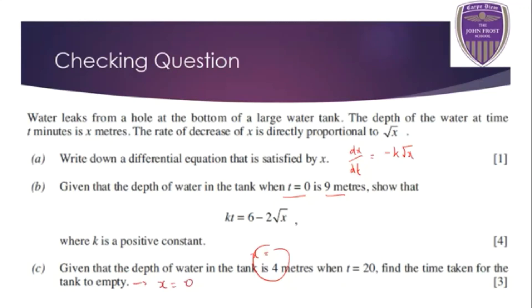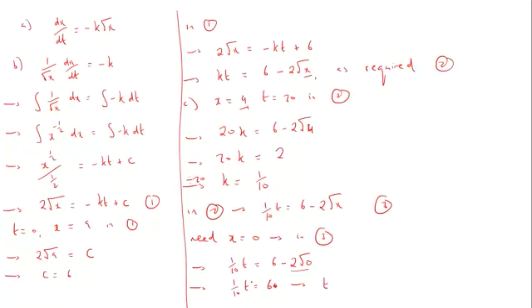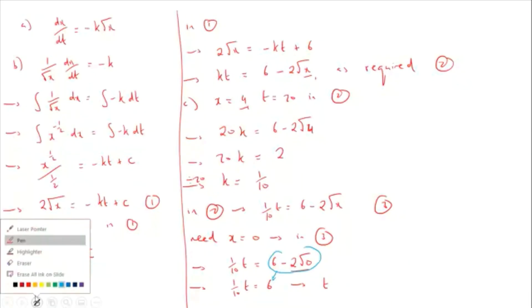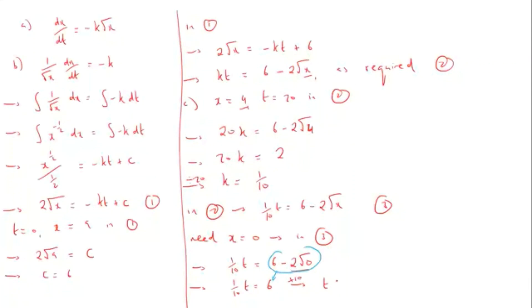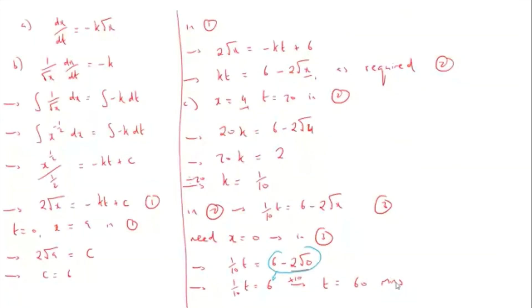Find the time for the tank to empty. When the tank is empty, x = 0. Substituting x = 0 into equation three: (1/10)t equals 6 minus 2√0 equals 6 minus 0 equals 6. Multiplying by 10: t equals 60 minutes, or one hour. Since time was given in minutes, the answer is 60 minutes.